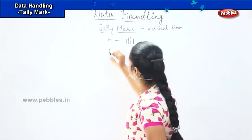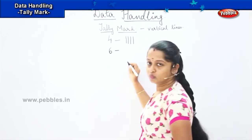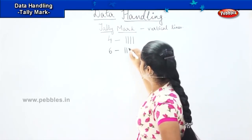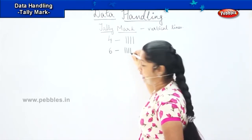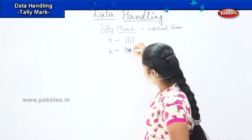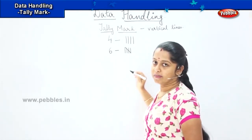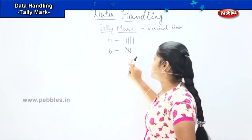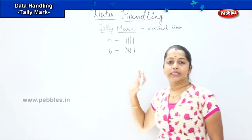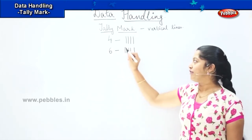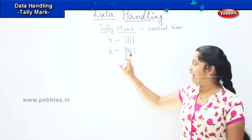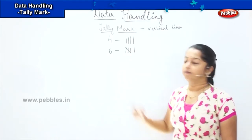Now if I want to do 6, how will I do? 1, 2, 3, 4, and my 5th line should be a slanting line. Always remember it. This is the only thing which we have to keep in mind while doing the tally mark.